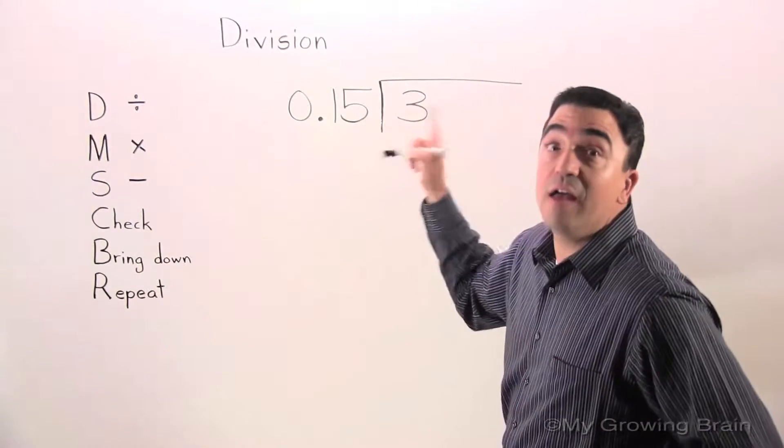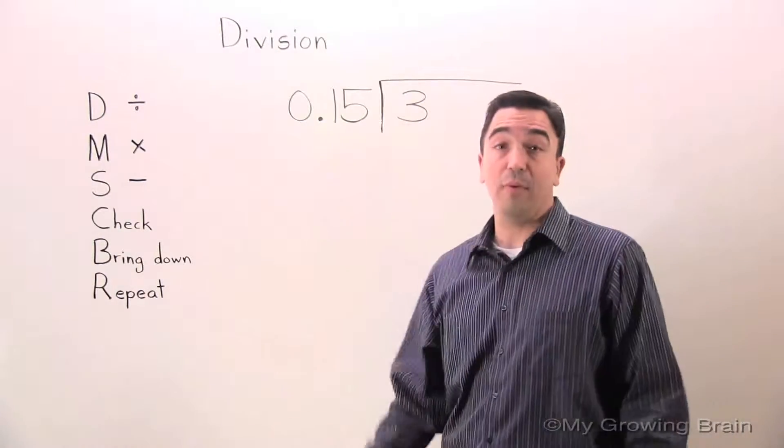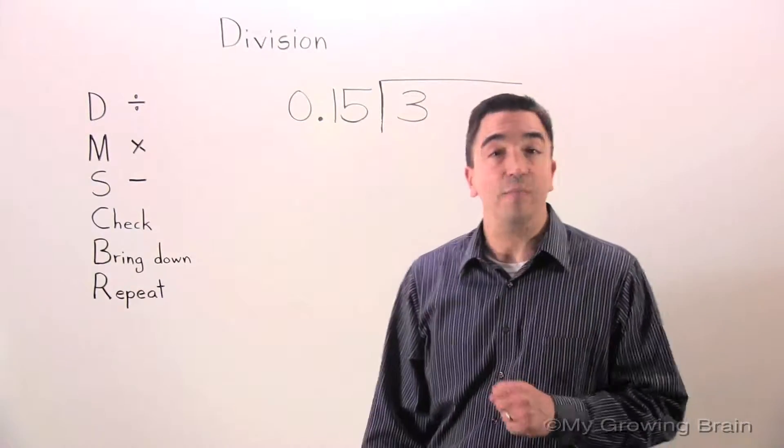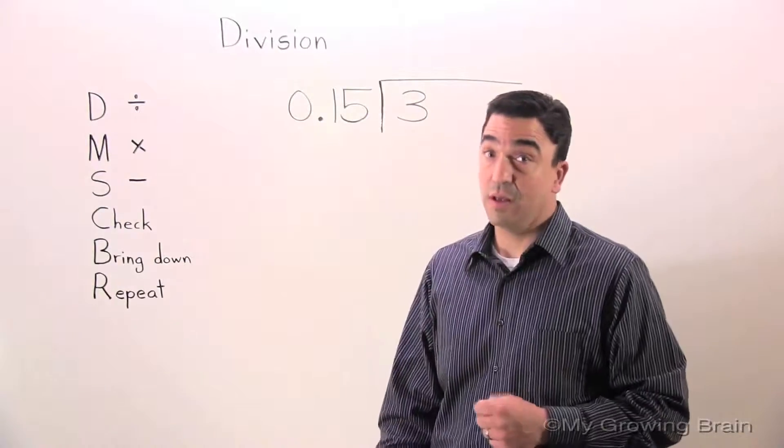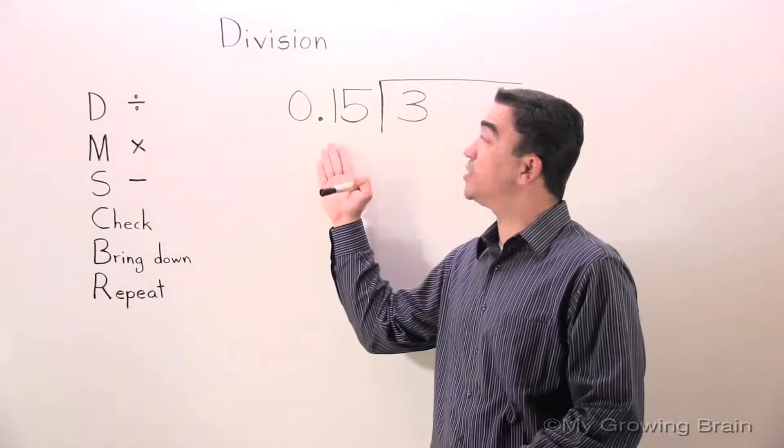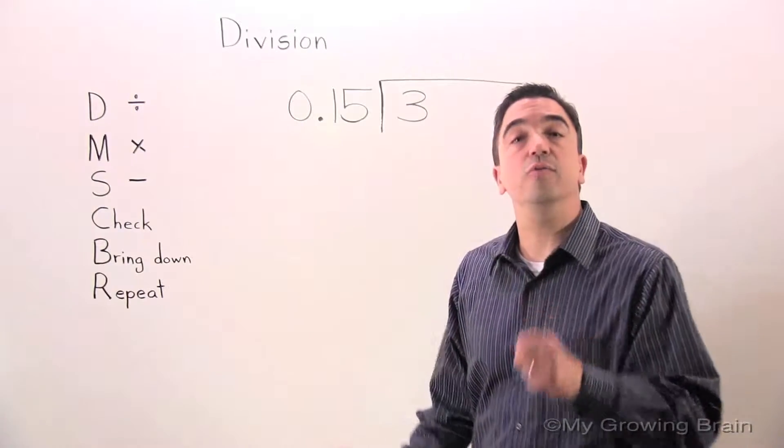Focus on the divisor. There's a decimal point. When you are dividing decimals, there cannot be a decimal in the divisor. So we have to change this decimal into a whole number.